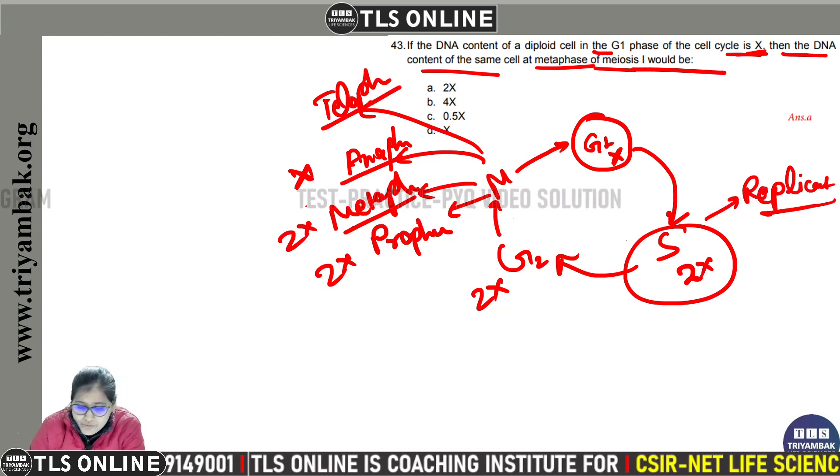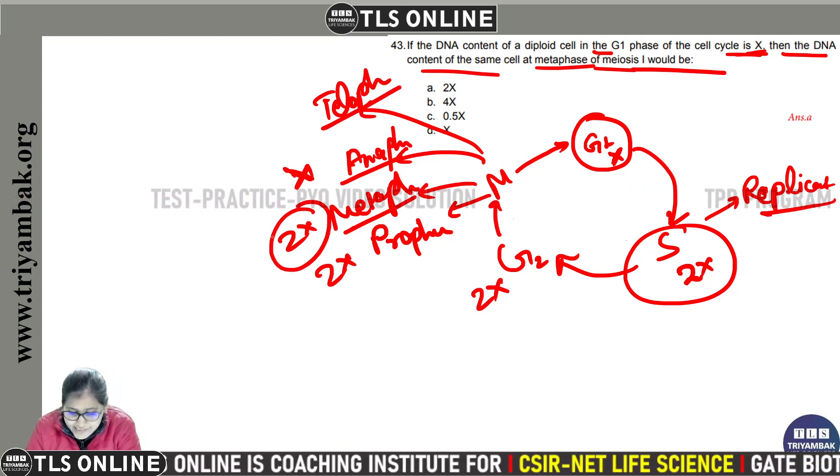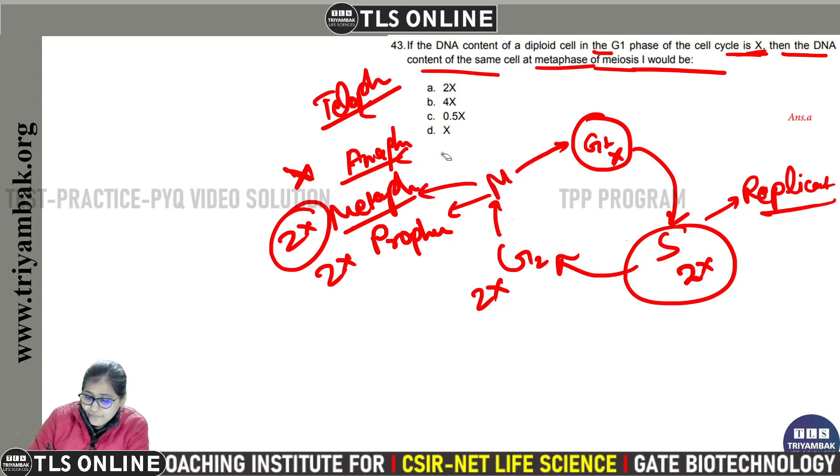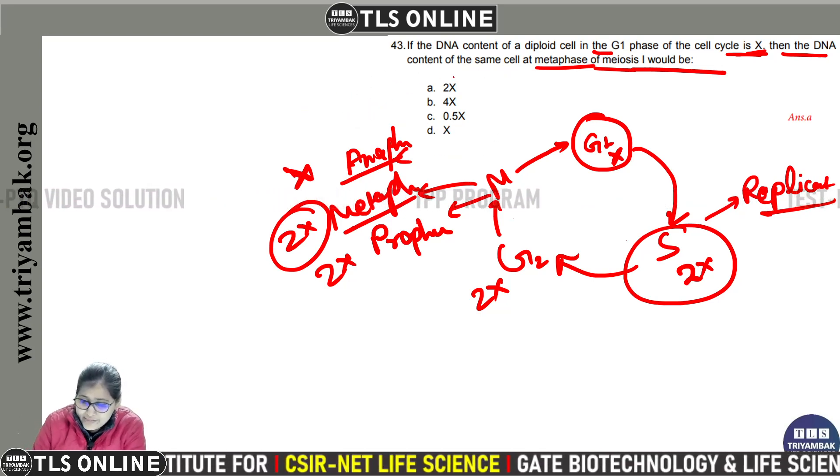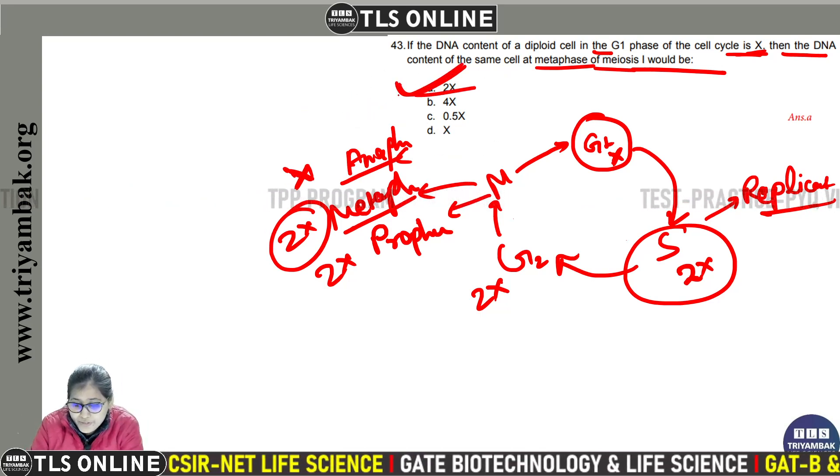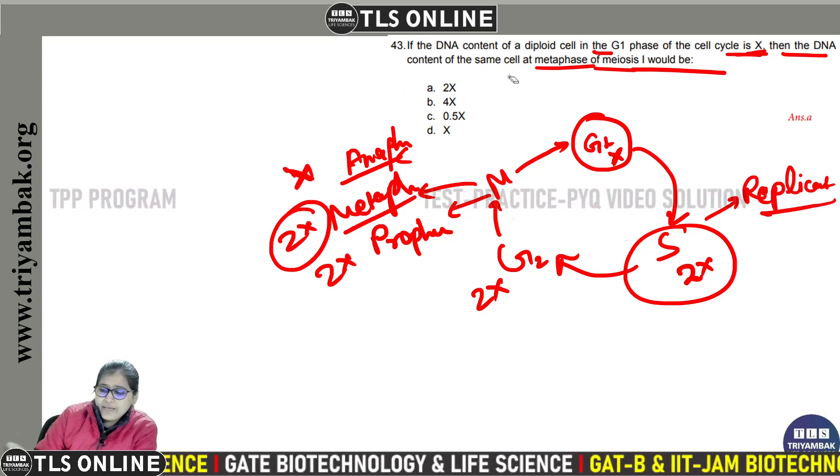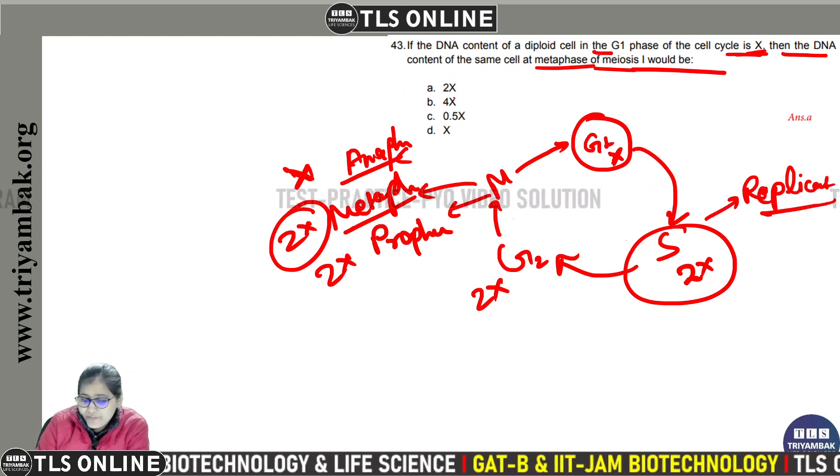So 2x metaphase one mein milega. So yaha par correct option is 2x. First option is correct. 2x is the correct option. Metaphase one mein, meiosis one ke metaphase one mein 2x DNA content milega.